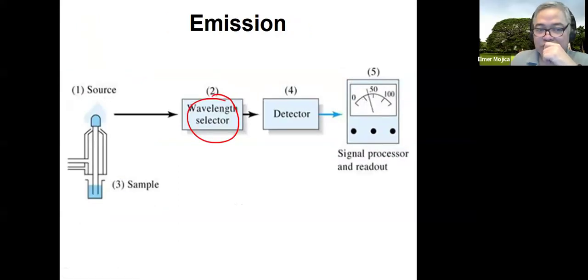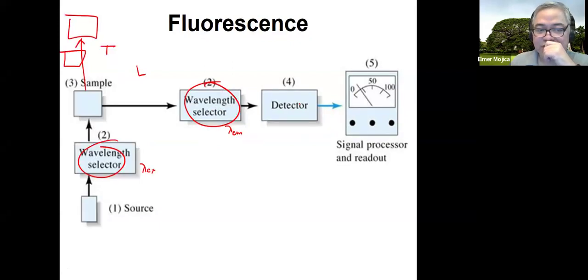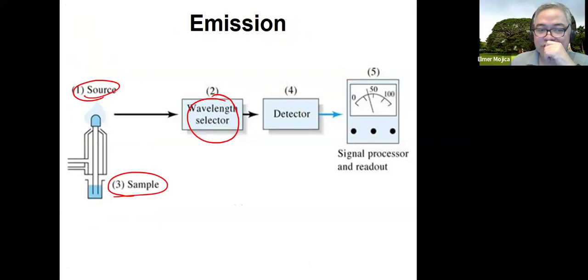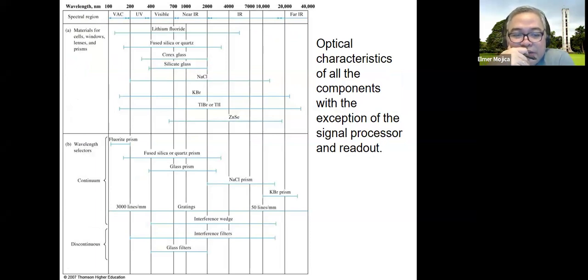In emission, you have a source, a sample, a wavelength selector, and then a detector. All of these instruments have just that arrangement. Based on the table here, this is just the materials that you use to hold your sample — it could be lithium fluoride, quartz, glass, silicate glass, or salt glass.